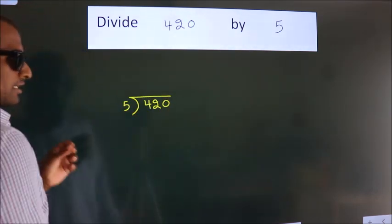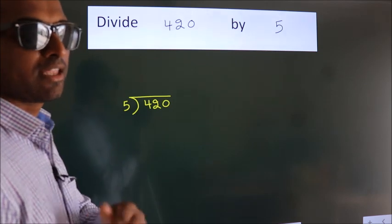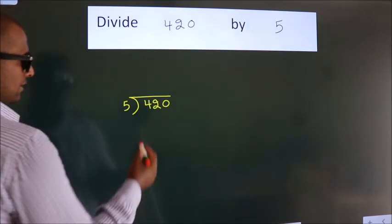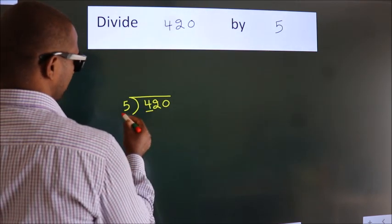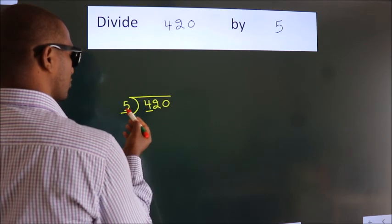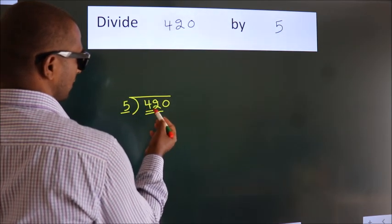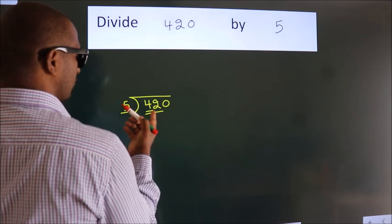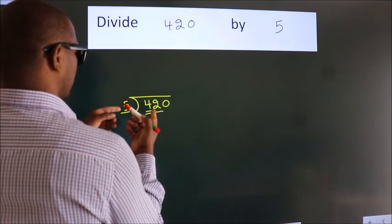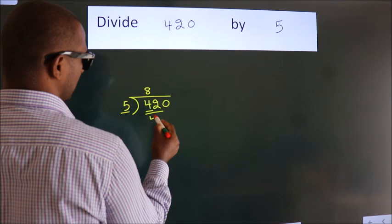This is your step 1. Next, here we have 4, here 5. 4 is smaller than 5, so we should take two numbers: 42. A number close to 42 in the 5 table is 5×8=40.